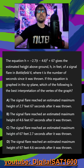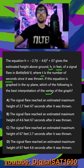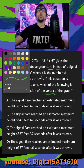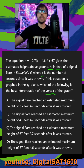The equation gives the estimated height above the ground h in feet of a signal flare in Battlefield 6, where t is the number of seconds since it was thrown. If this equation is graphed in the xy plane, which of the following is the best interpretation of the vertex of the graph? You are totally fine to do this one in Desmos — I will do it in Desmos after we go through it by hand.